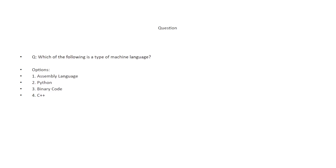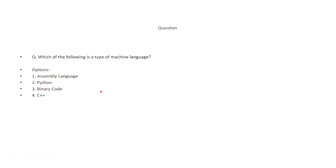Which of the following is a type of machine language? The options are: assembly language, Python, binary code, and C++. Python and C++ are programming languages, and assembly language is assembly language — so the machine language here is binary code. Machine language basically consists of binary codes that a computer can understand, which are zeros and ones.